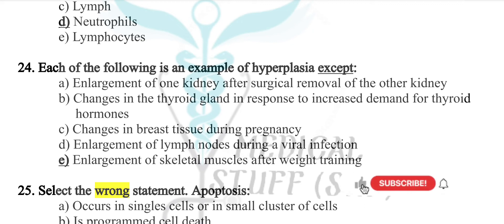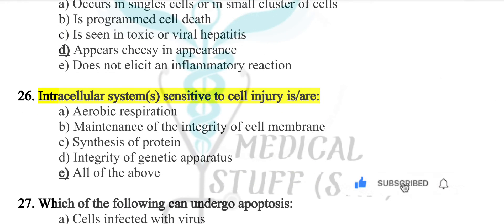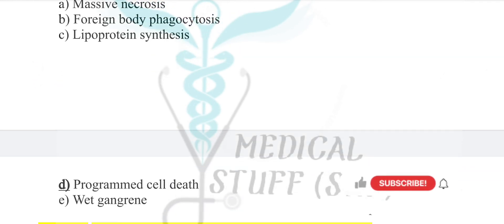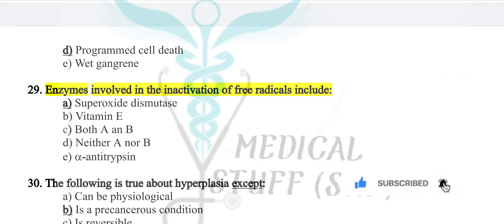Changes in the thyroid gland, changes in the breast, and enlargement of the lymph nodes are examples of hyperplasia. Which of the following can undergo apoptosis? The answer is all of the above — cells infected with virus, cells with DNA damage, and cells with increased oxygen. Inactivation of free radicals is induced by superoxide dismutase. This is your professor's question.